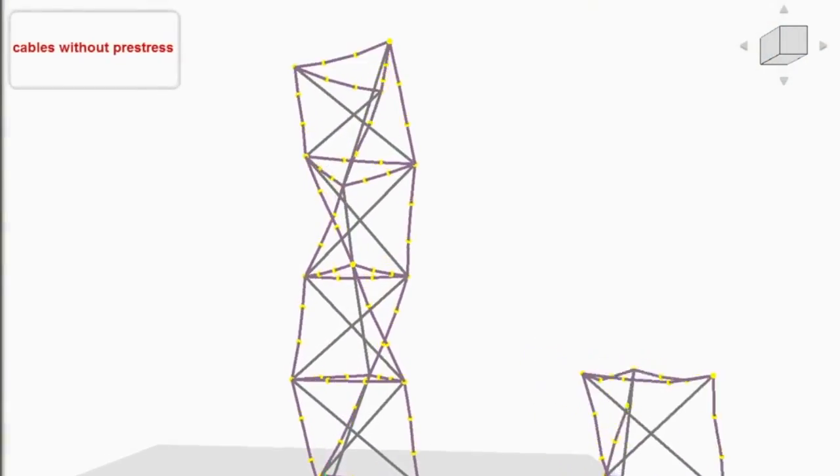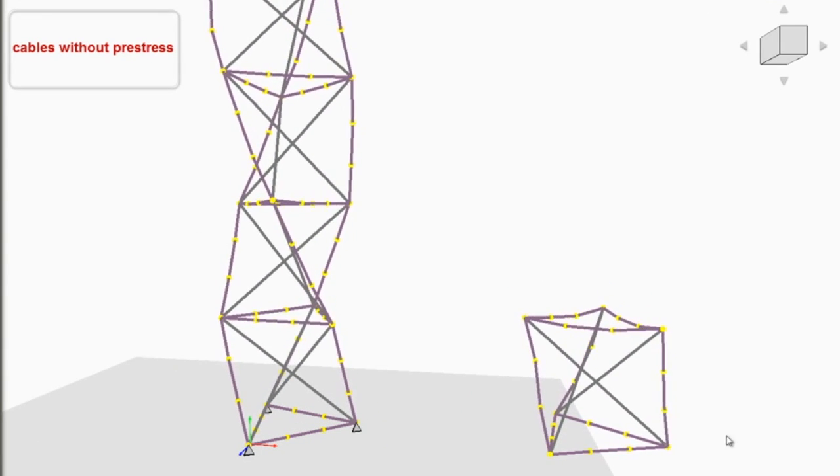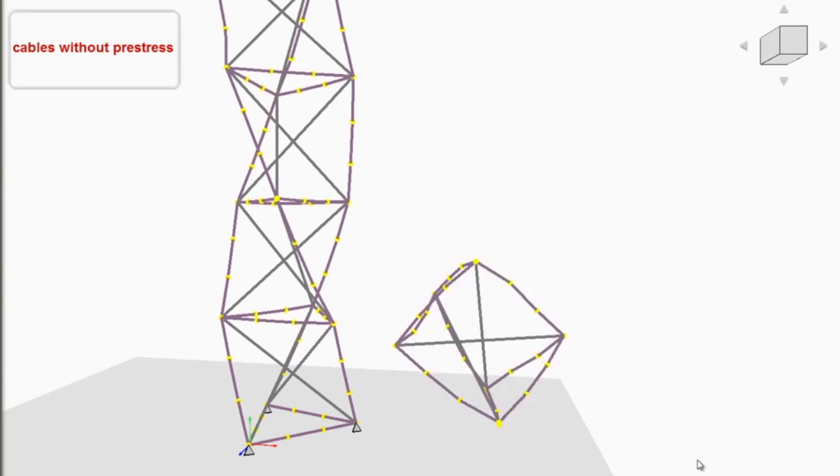As we observe the movement of this tensegrity structure, notice the importance of the elastic bands and how they create such resilience and pliancy for the structure.